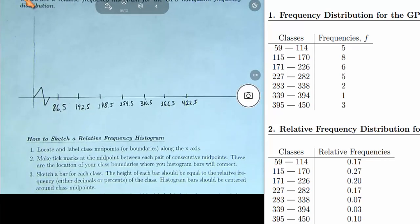Make sure your midpoints are equally spaced so that your graph looks uniform and accurate. Okay, so that's the location of all our class midpoints. In step two, we're going to make tick marks at the midpoint between each pair of consecutive midpoints.